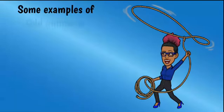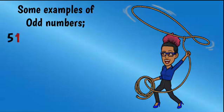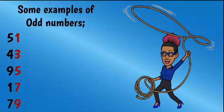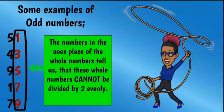So let's see some examples of odd numbers: 51, 43, 95, 17, and 79. The numbers 1, 3, 5, 7, and 9 in the ones place of these whole numbers tell us that these whole numbers cannot be divided by two evenly.